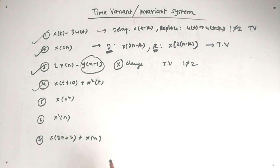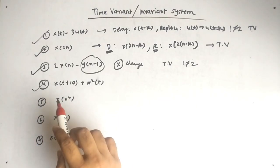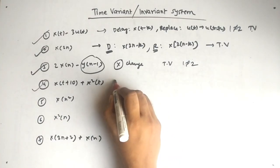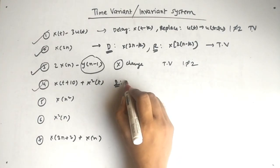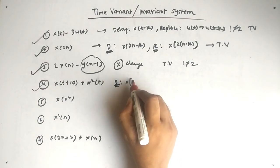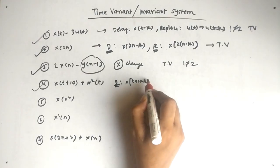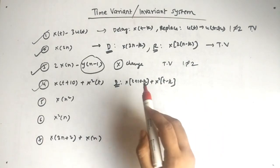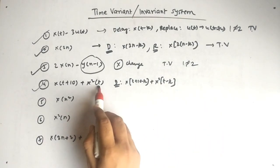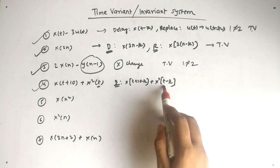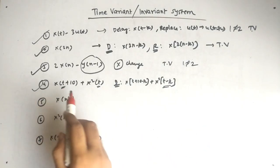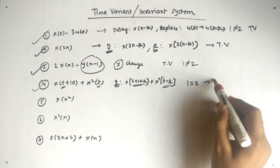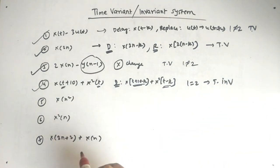The fourth example is very interesting: y = x(t + 10) + x²(t). In the delay step, we get x(t + 10 − k) + x²(t − k). When we replace t by (t − k), we also get x((t − k) + 10) = x(t + 10 − k) plus x²(t − k). So step one equals step two — this means it is time invariant.